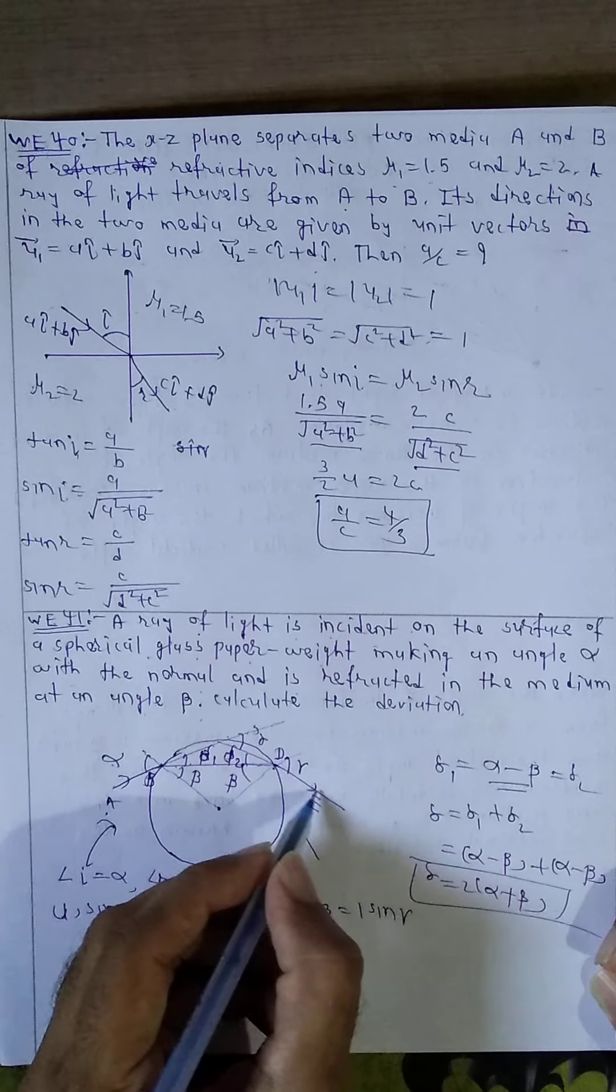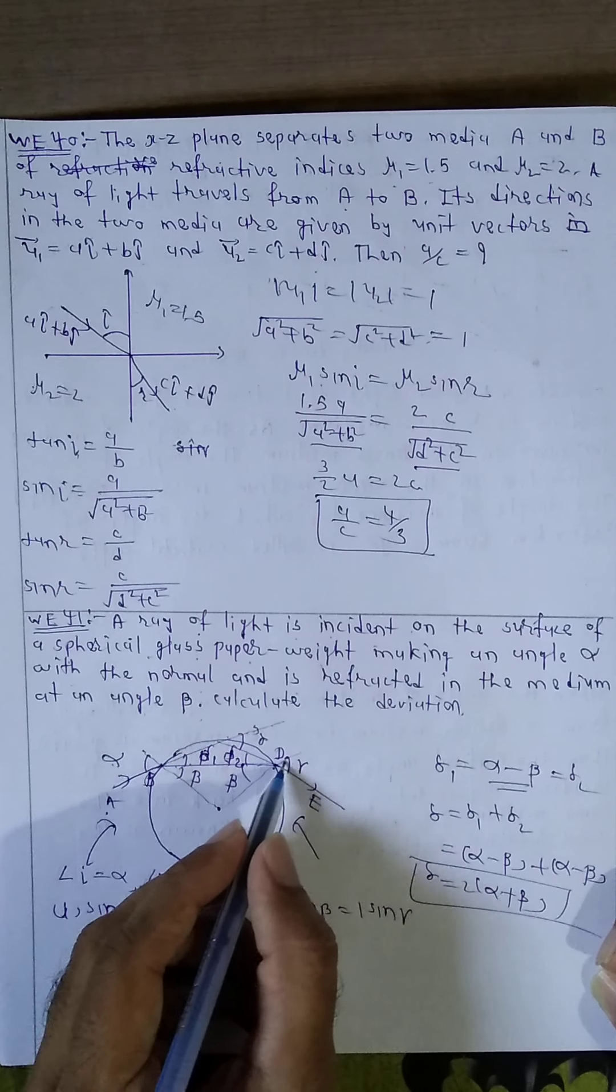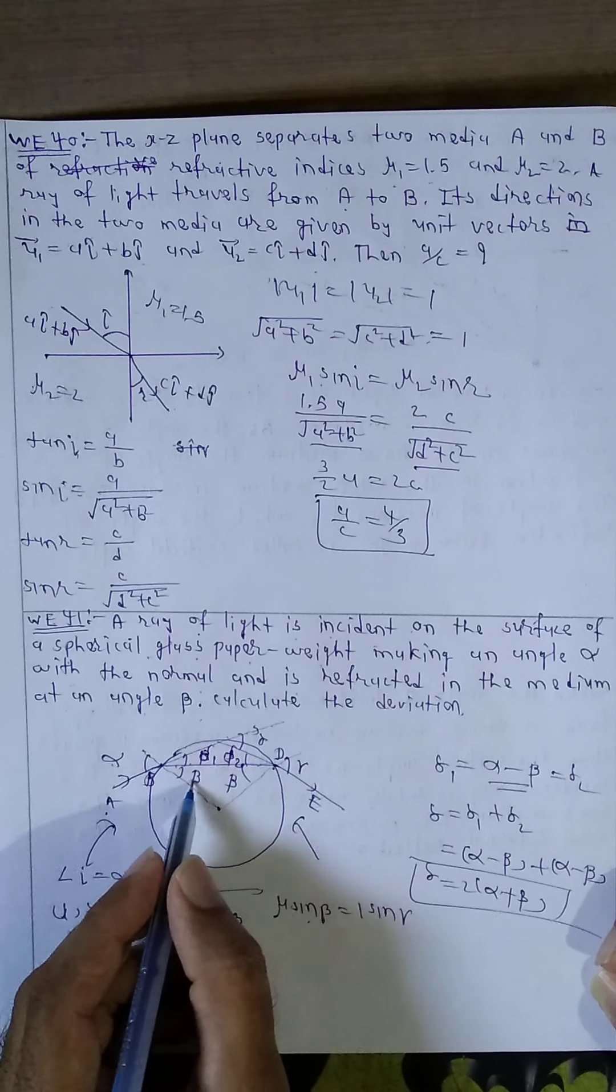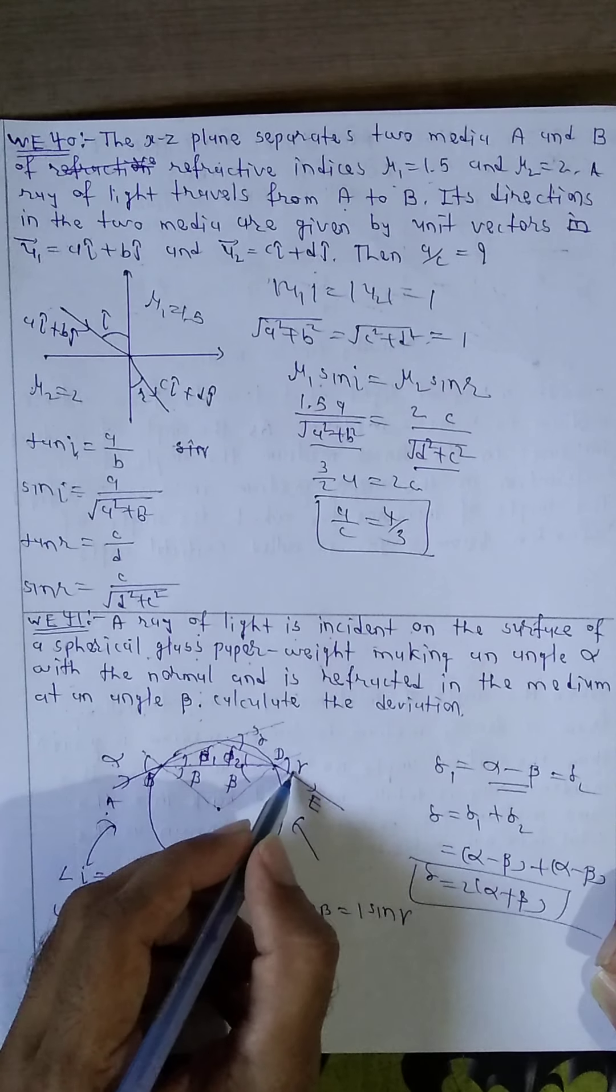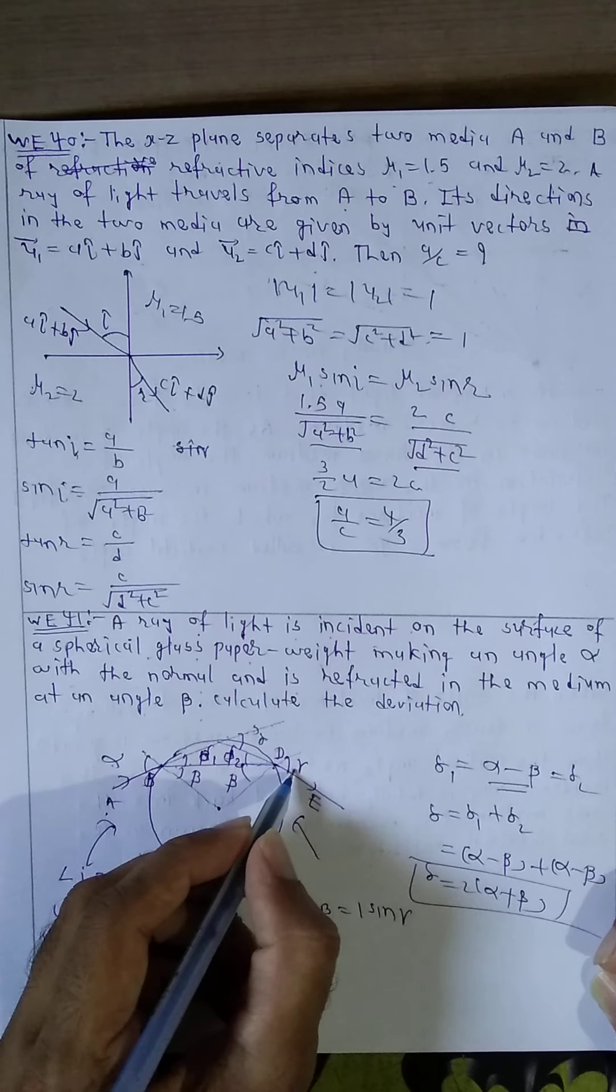So this is the deviation, first deviation after reflection. This is also normal. Therefore this is beta, this is also beta. Therefore this is the deviation, and this is gamma.